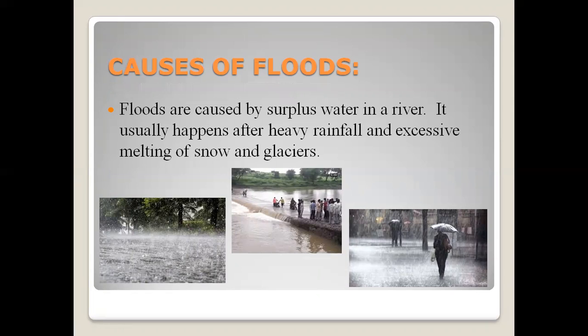What causes floods? Floods are caused by surplus water — an extreme amount of water — in a river. It usually happens after heavy rainfall. When it rains heavily, water comes in heavy amounts and is stored in a river, but a river can only store water up to a specific limit. When that limit is crossed and the river is not able to hold more water, it overflows. Heavy rainfall can cause floods, and excessive melting of snow and glaciers also causes floods.